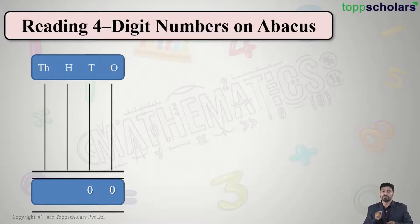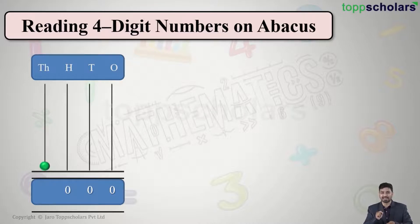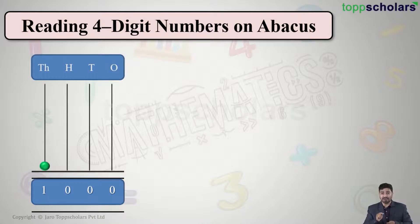Moving to the next place — is there any bead? No, again it is zero. But in the thousands place, one bead has come, so I will write one there. So the number formed is one thousand.